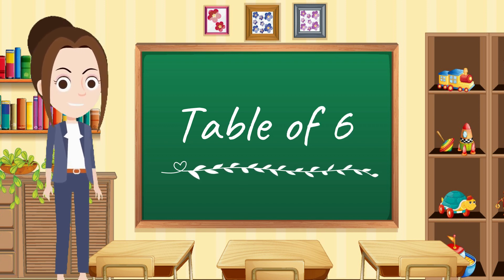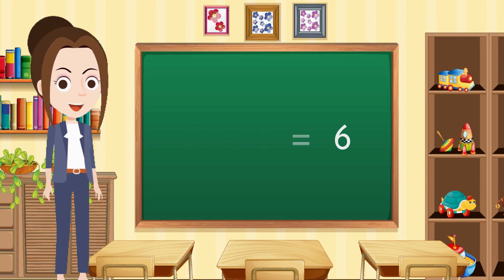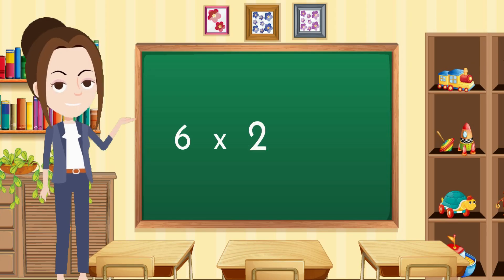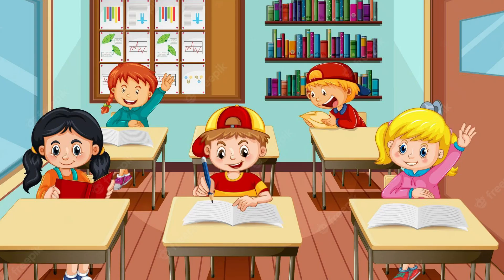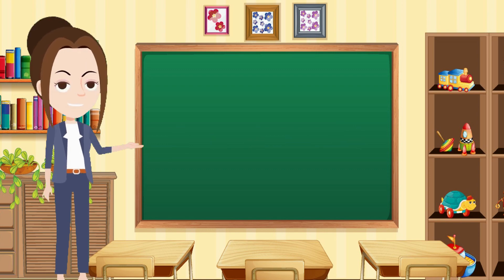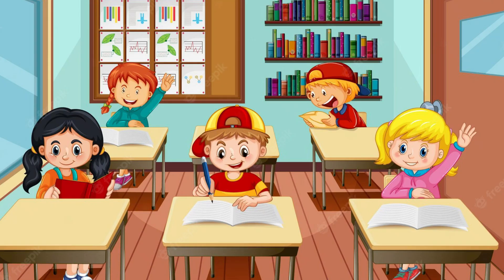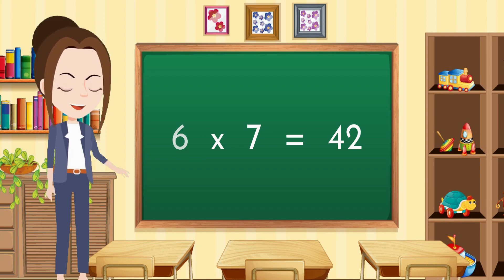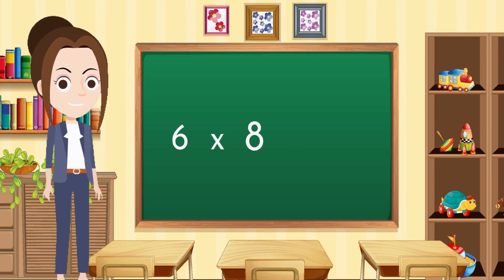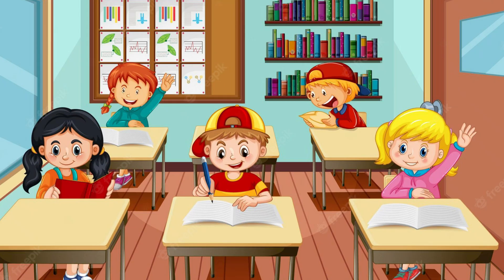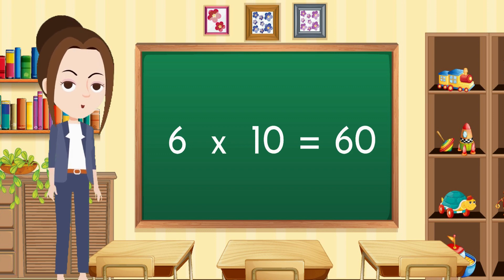Dear kids, let's start to learn the table of six. Six ones are six. Six twos are twelve. Six threes are eighteen. Six fours are twenty-four. Six fives are thirty. Six sevens are forty-two. Six eights are forty-eight. Six nines are fifty-four. Six tens are sixty. You have read the table of six with me.